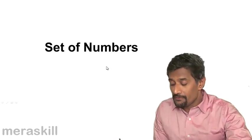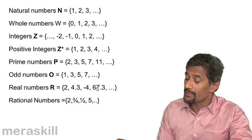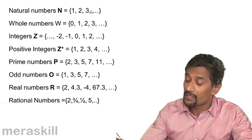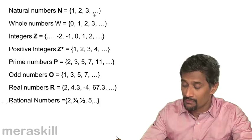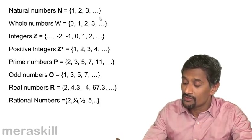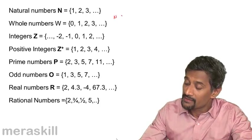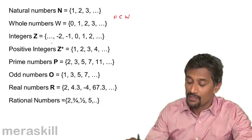Now we have a part on set of numbers. Let's quickly go through the various types of numbers. We know that the set of natural numbers is N = {1, 2, 3, ...} and the set of whole numbers is W = {0, 1, 2, 3, ...}. Just to revise what we did, you can see that N is a subset of W.